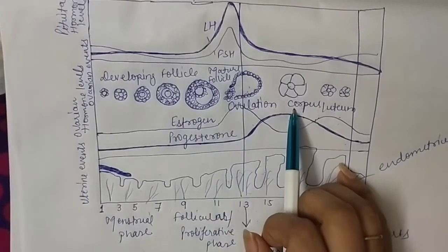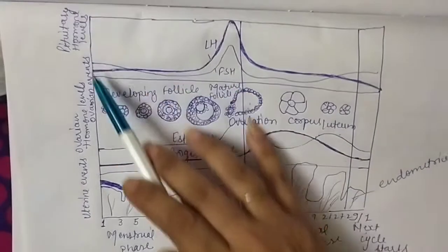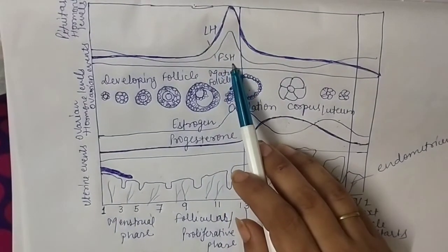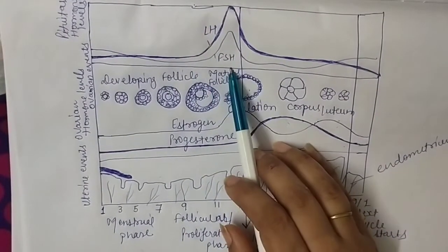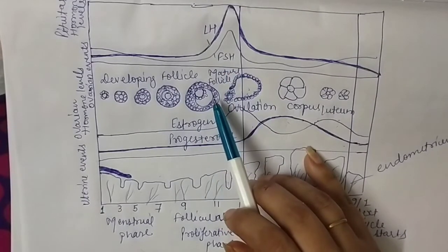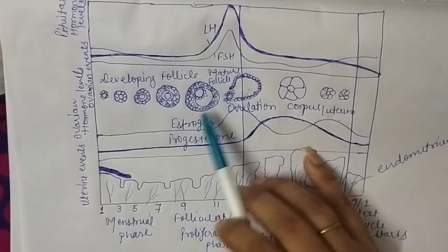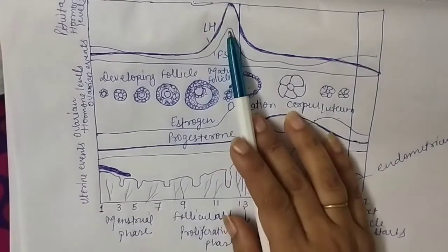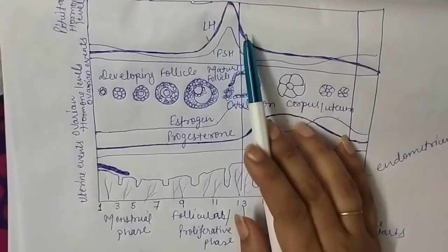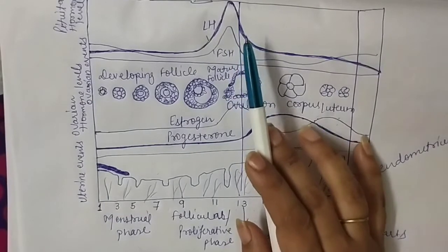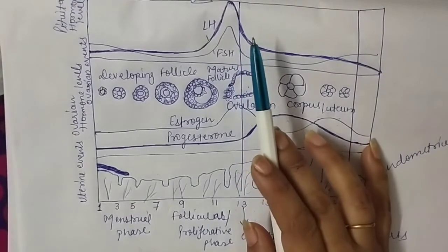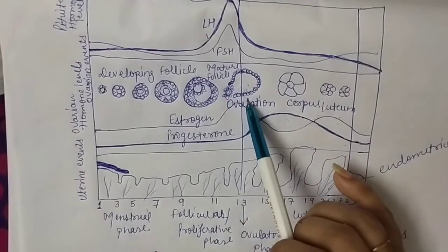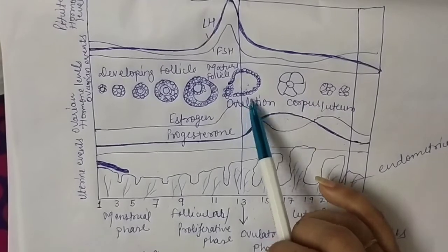Last are the pituitary hormones: luteinizing hormone and follicle stimulating hormone. FSH's function is to stimulate the development of follicles, changing immature ova into mature ova. Luteinizing hormone's function is that on day 13 to 14, its concentration reaches peak and it enhances and controls the release of ova from the Graafian follicle.